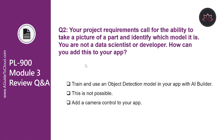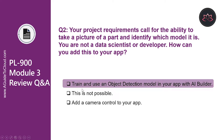Let's look at question number two. Your project requirements call for the ability to take a picture of a path and identify which model it is. You are not a data scientist or developer. How can you add this to your app? Is it to add a camera control to your app? No. Is this not possible? Yes, this is definitely possible. The correct answer is train and use an object detection model in your app with AI Builder.